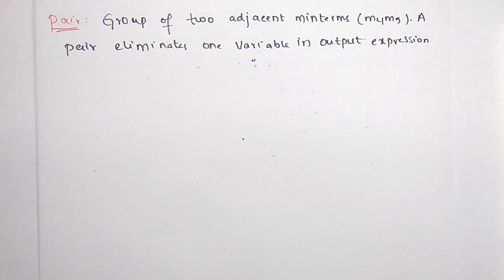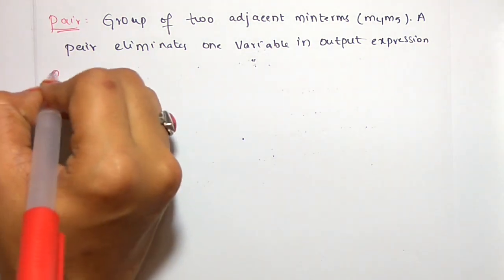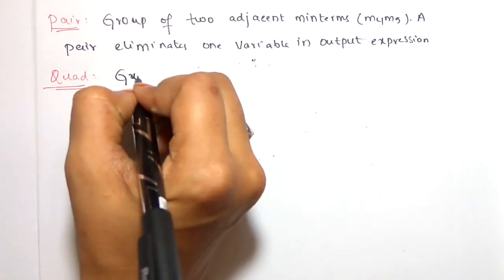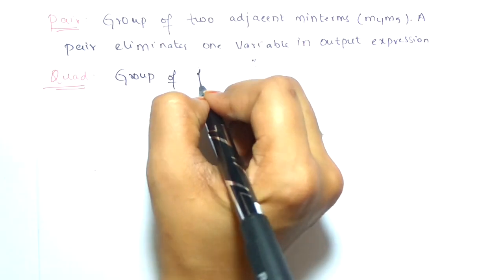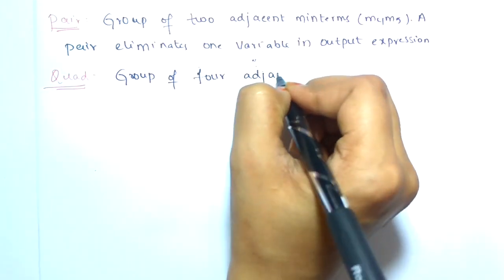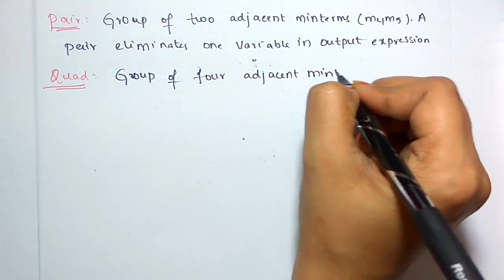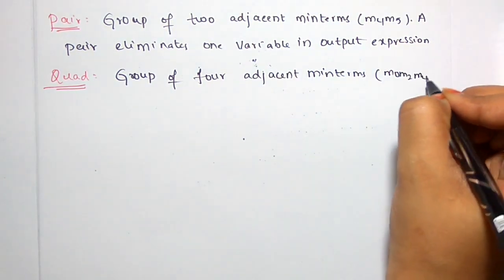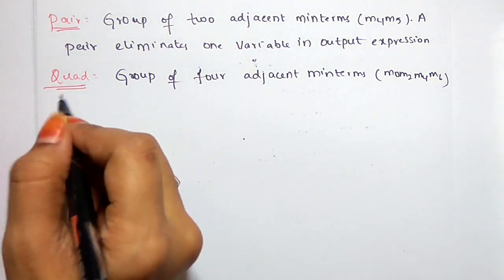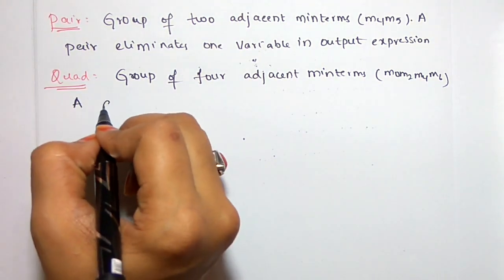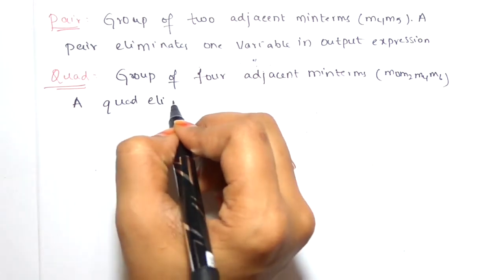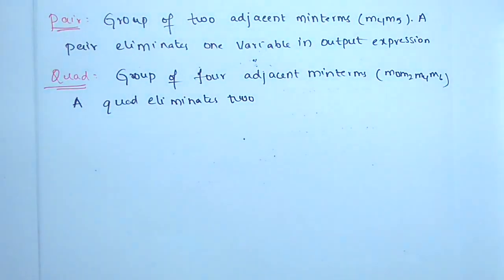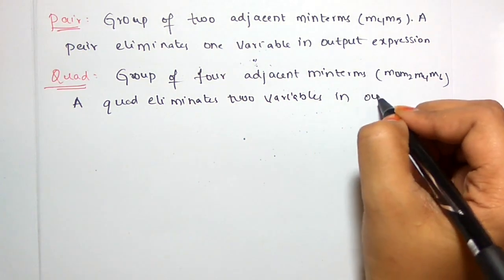Next one is quad. A quad is a group of 4 adjacent minterms. For example, M0, M2, M4, M6. A quad eliminates two variables in the output expression.